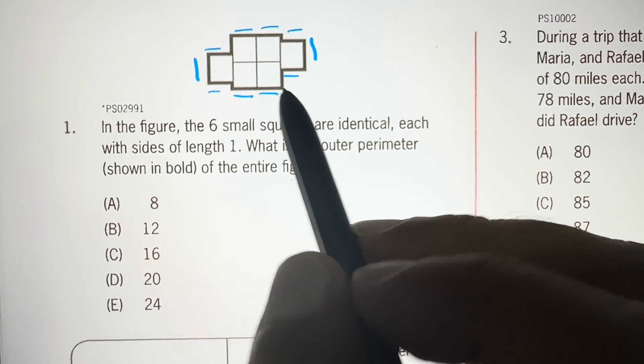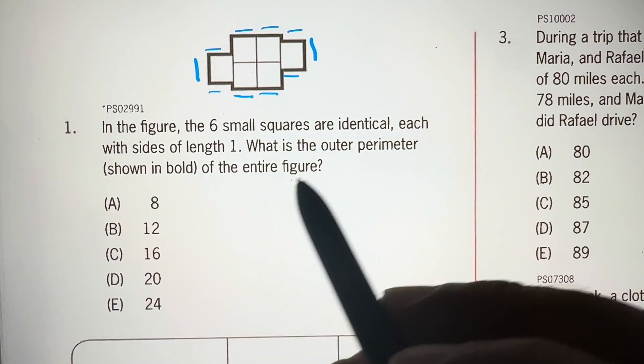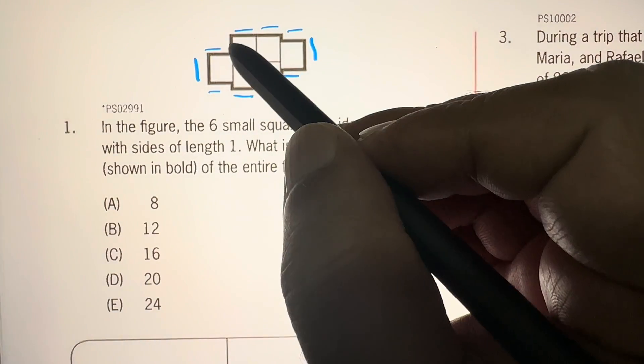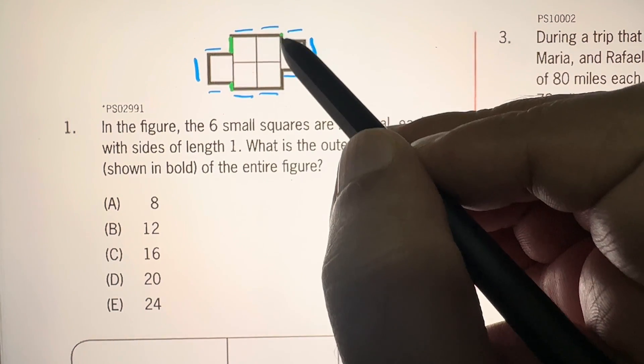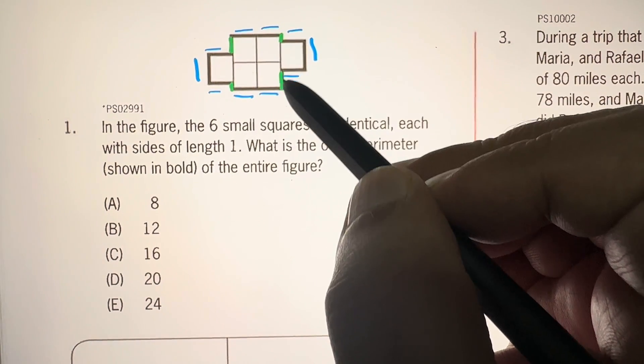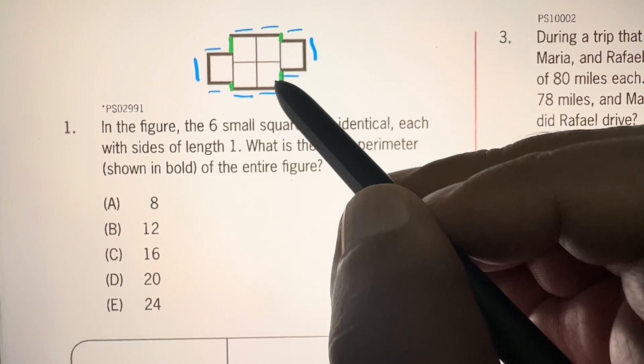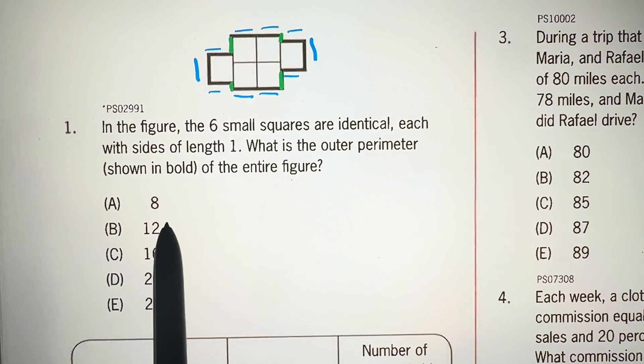and 10. But we have this plus this is equal to 1, so 11. And this plus this is equal to 1, so 12 total. That's our answer, choice B.